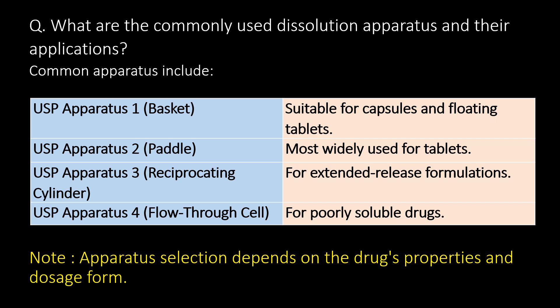What are the commonly used dissolution apparatus and their applications? USP apparatus 1, basket type, is suitable for capsules and floating tablets. USP apparatus 2, paddle type, is the most widely used for tablets. USP apparatus 3, reciprocating cylinder, is used for extended release formulations. USP apparatus 4, flow-through cell, is used for poorly soluble drugs. Apparatus selection depends on the drug's properties and dosage form.